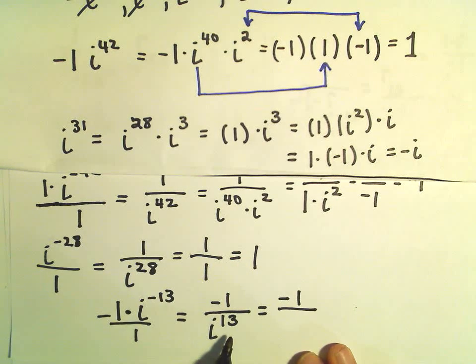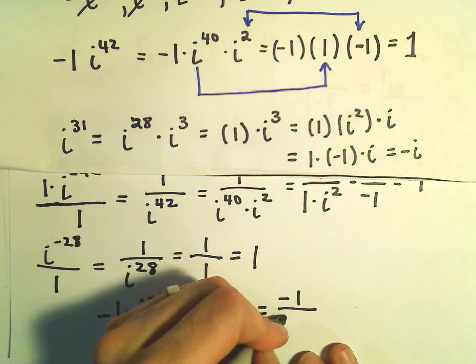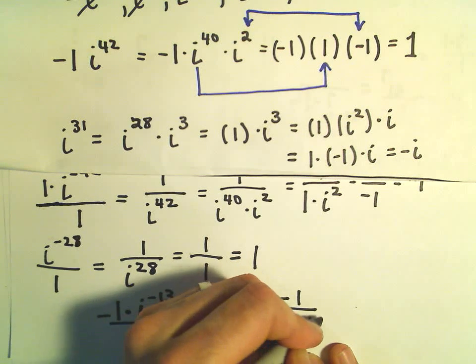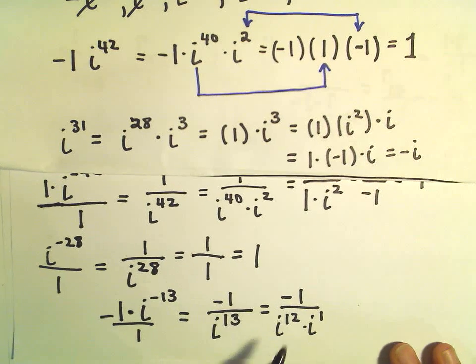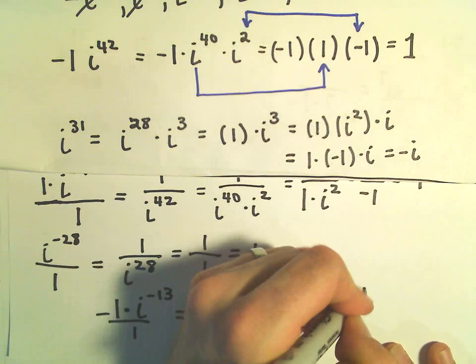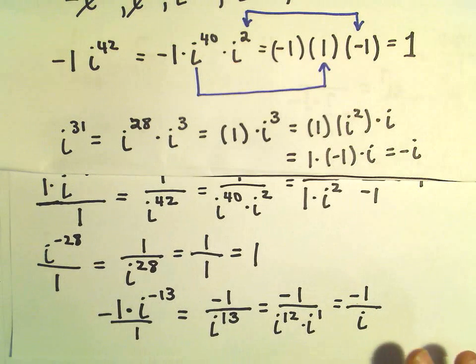And again, 13 is not a multiple of 4, but I can write it as i to the 12th times i to the first. i to the 12th is simply equal to 1. So we'll be left with negative 1 over i.